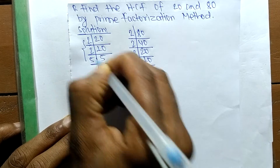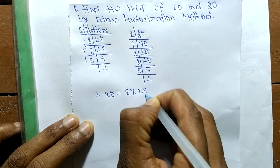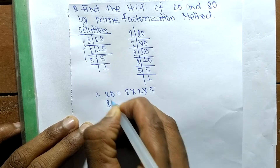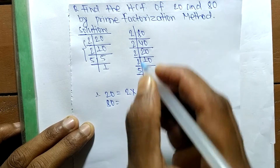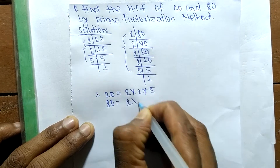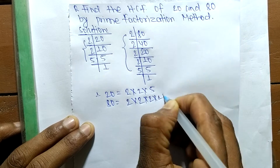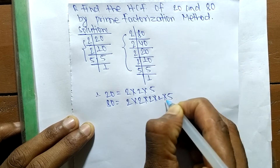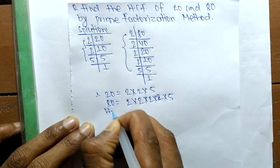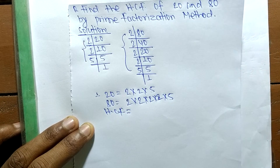So from these prime factors we can write: 20 is equal to 2 times 2 times 5, and 80 is equal to 2 times 2 times 2 times 2 times 5. Now its HCF is equal to the common factors.